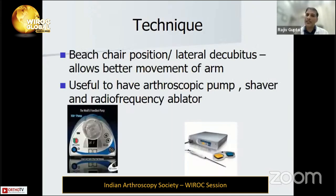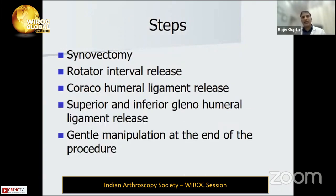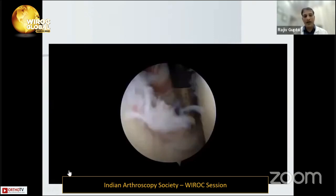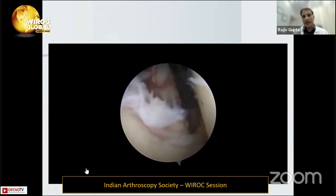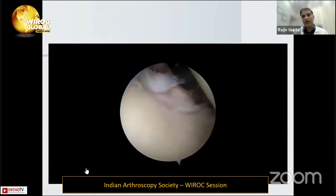Arthroscopic release can be done in beach chair or lateral position depending on your training. You require a pump, arthroscope, and a radiofrequency ablator — very important in these cases because the joint is already tight and vision is difficult. The steps are: first do bursectomy, then release the rotator cuff interval, coracohumeral ligament, then superior and inferior glenohumeral ligament, and finally a gentle manipulation. In the video I release the middle glenohumeral ligament and inferior glenohumeral ligament.